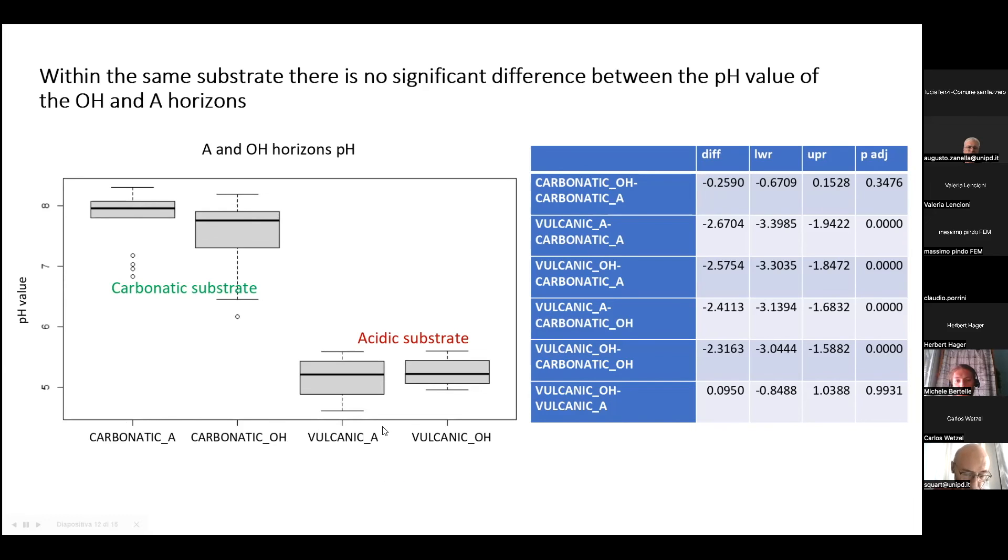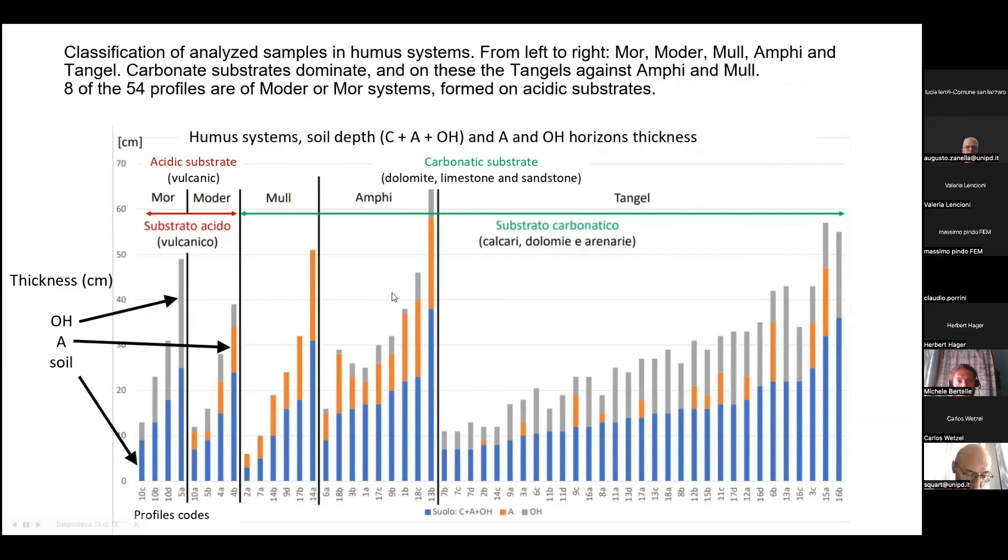In the end, here is the classification of all the humus systems we found in this research. Most of them were Tangel humus, but we also had Amphi and Mull on carbonatic substrate, and Moder and Mor on acidic substrate.